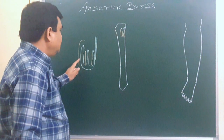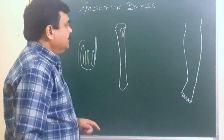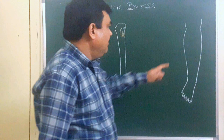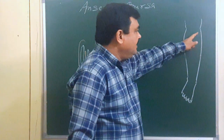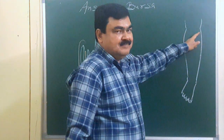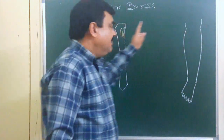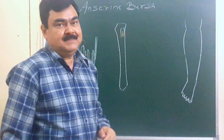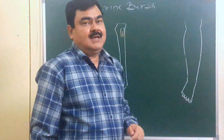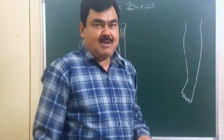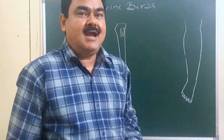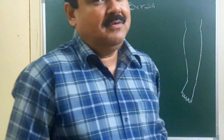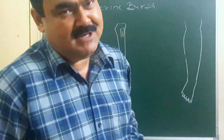In case of repeated trauma over the medial side of the upper part of the leg, this bursa may become inflamed, causing swelling and pain over the upper part of the medial side of the leg.